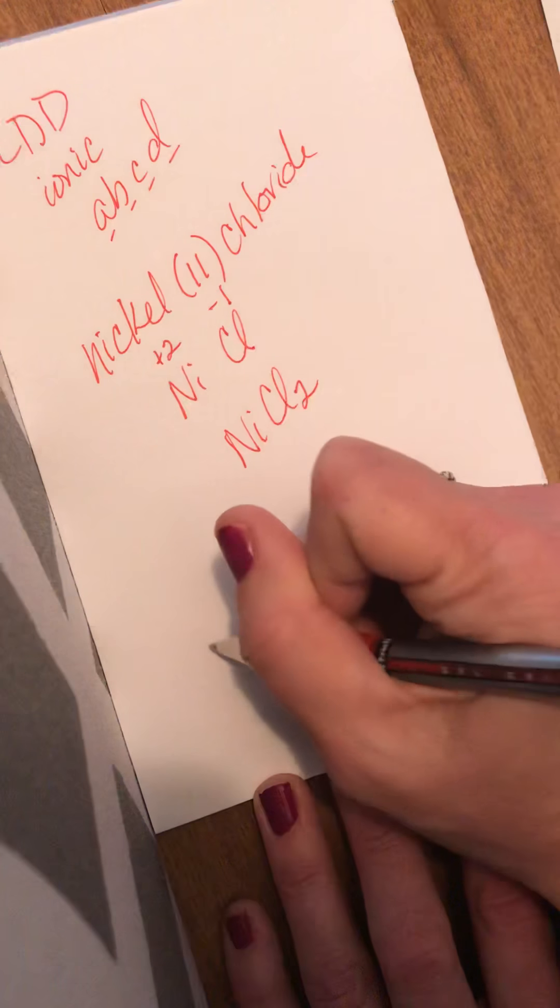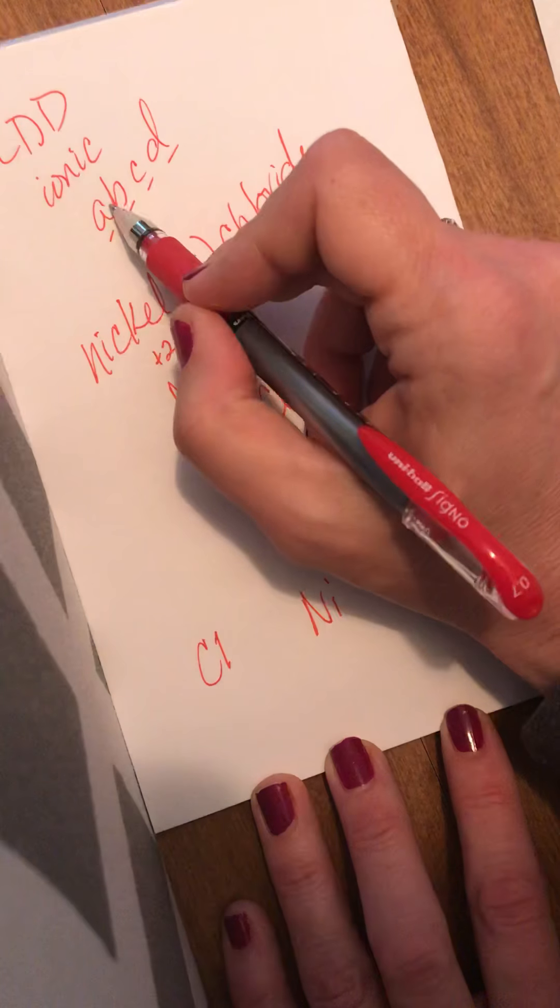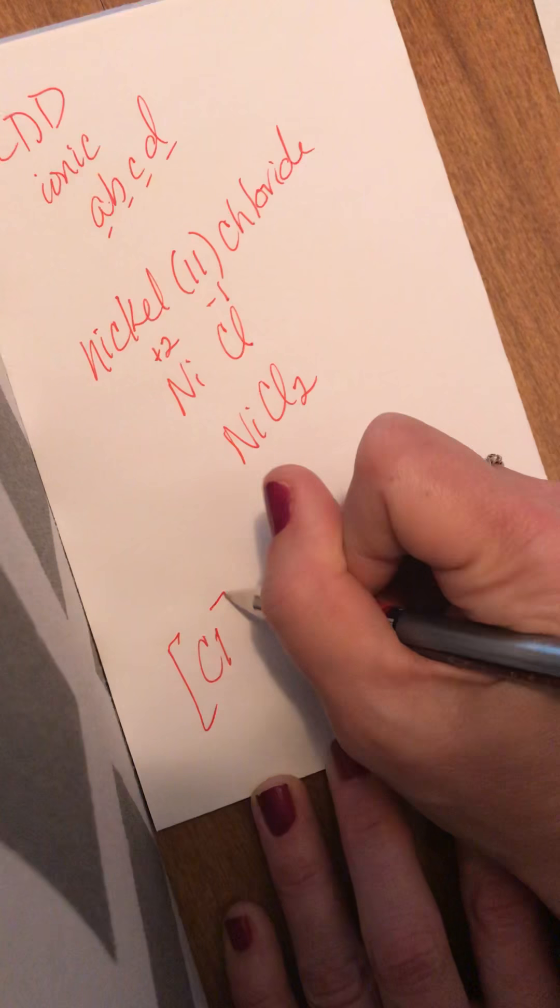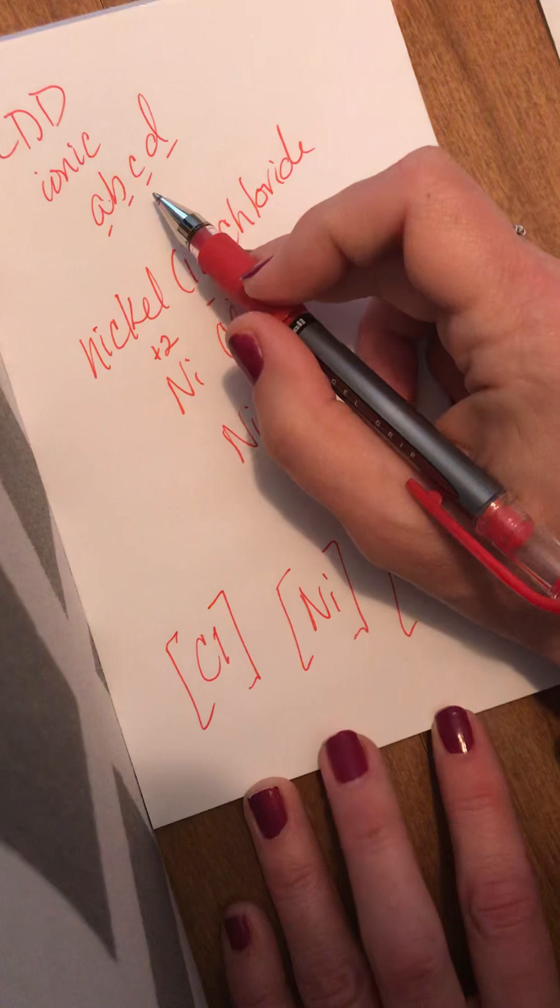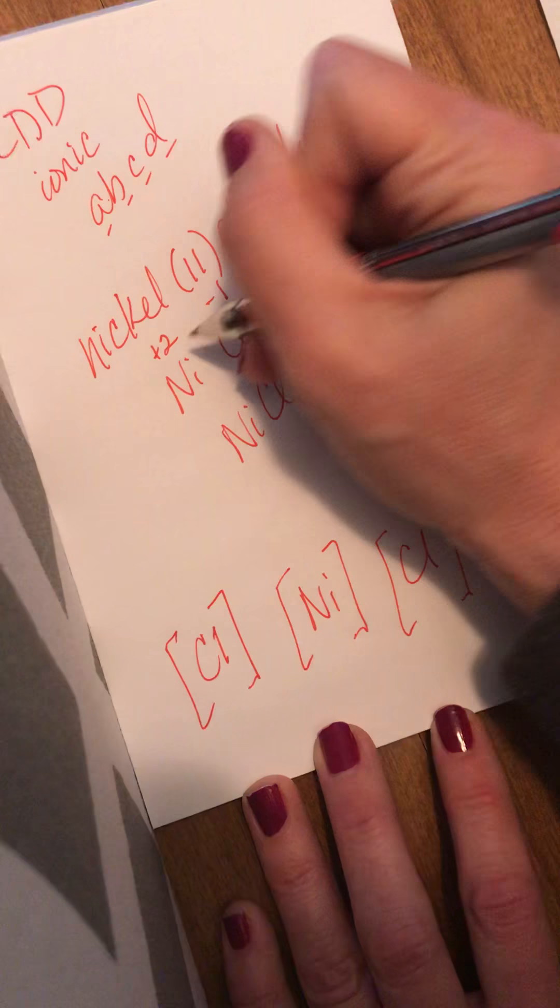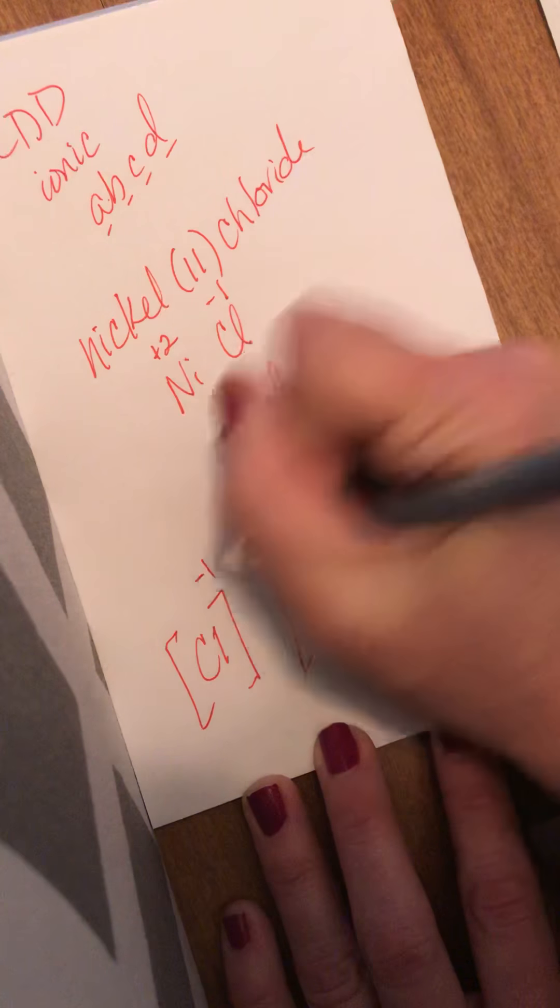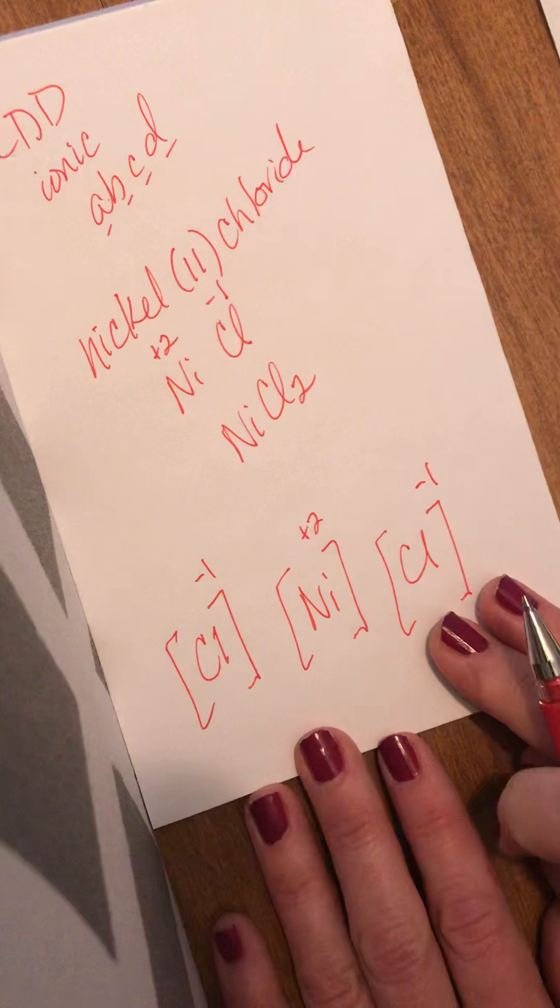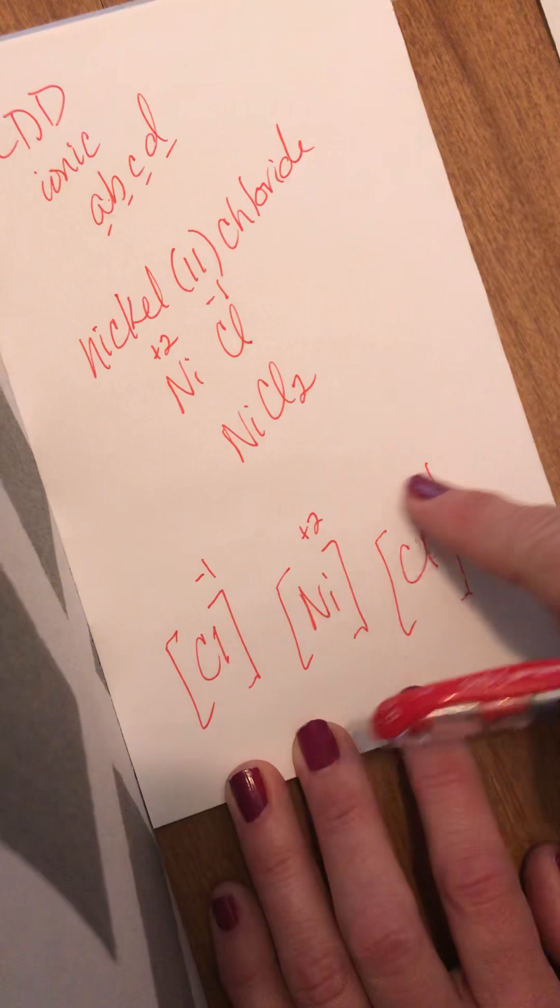B, brackets. I put brackets around all of the atoms. C, charges. The charge on Ni was a +2. The charge on both of the Cl's is a -1. If you have a compound and not an ion, you should be able to add up the charges and always equal zero.